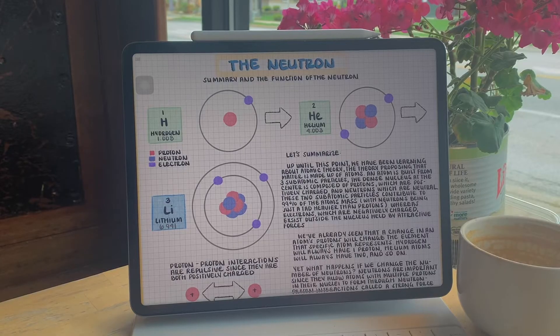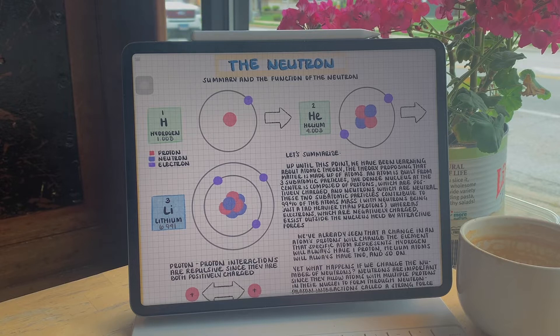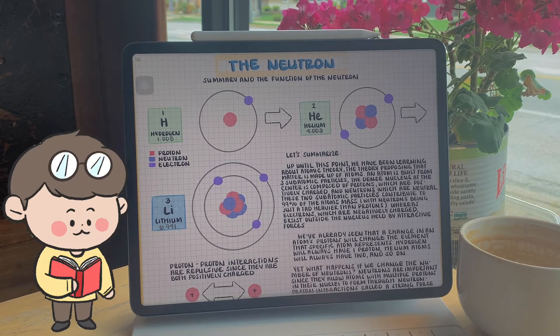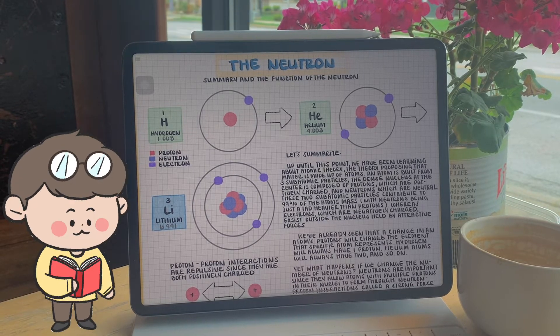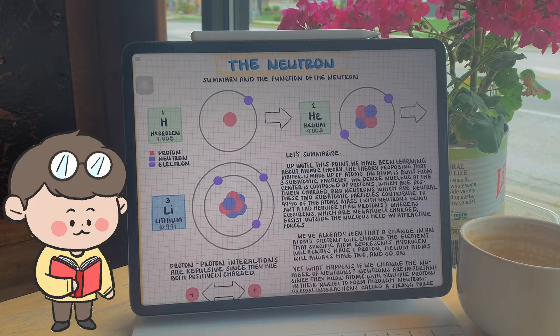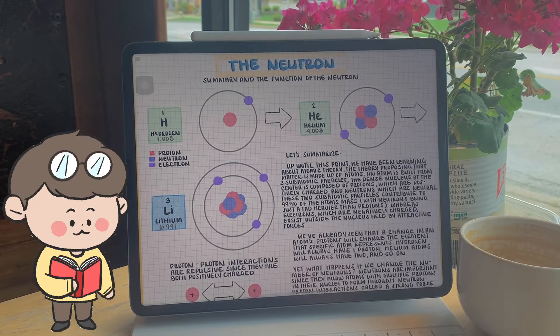So let's summarize a lot of the things we've been talking about up until this point. We have been learning about atomic theory, the theory proposing that matter is made up of atoms, an atom being built from the three subatomic particles.